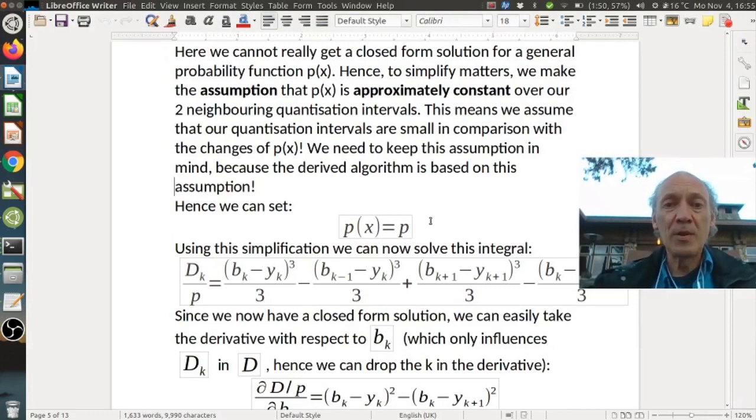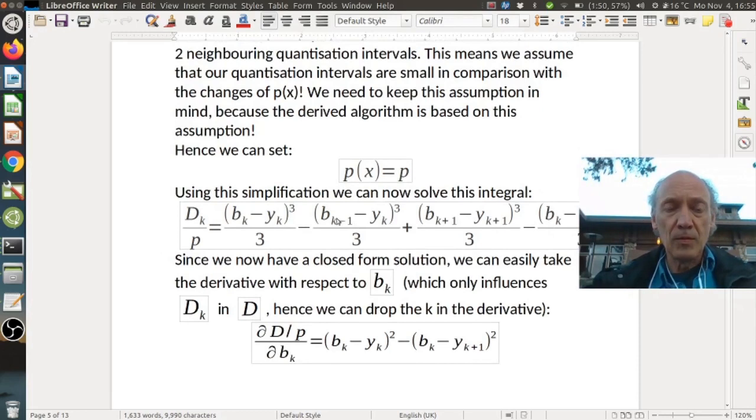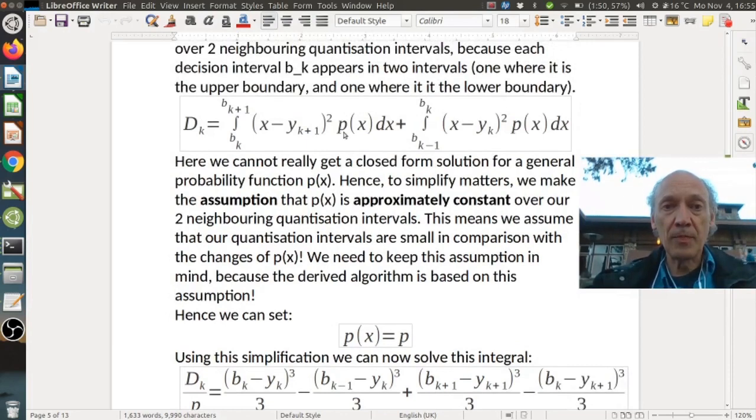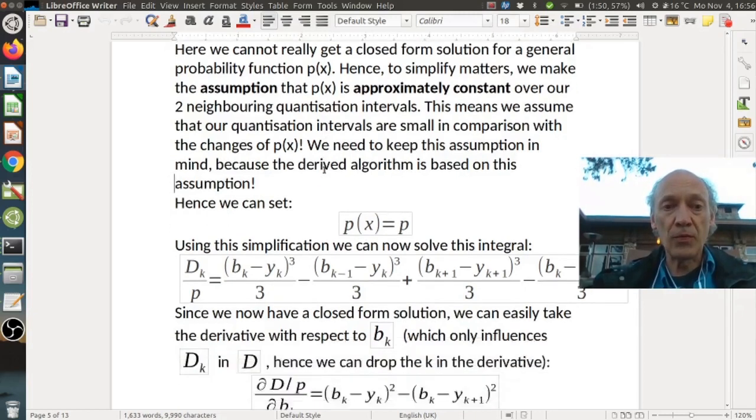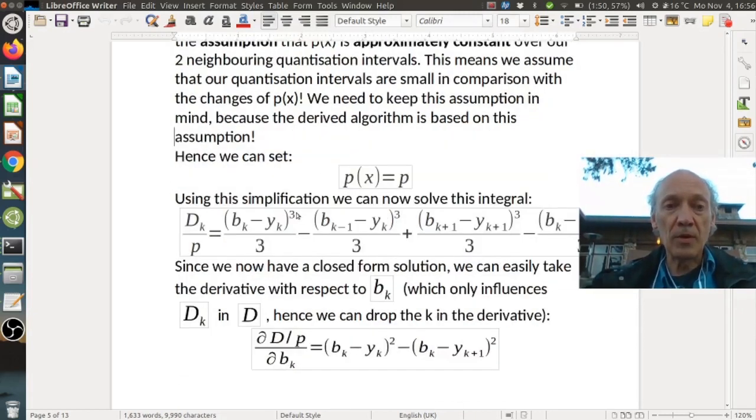So hence we can set p(x) equals p for each interval. So this p might be different for each interval but it's the same inside this interval. So using this simplification we can now solve this integral. So then it actually becomes easy when you compare it to our formula here. p(x) now becomes p. So that means basically we can keep p outside the integral. And then we just have an integral of this quadratic function. And an integral of a quadratic function is a cubic function with a one-third in front of it. And this is what we can see here. So this is the upper limit of the first integral minus the lower limit. This is the result.